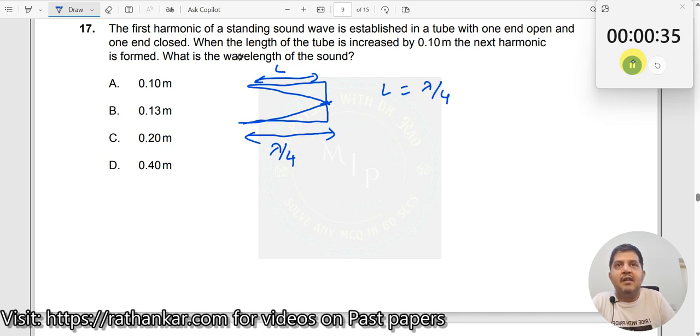When the length of the tube is increased by 0.1 meters, the next harmonic is formed.